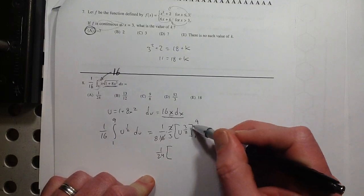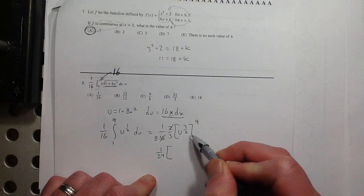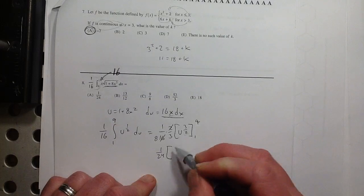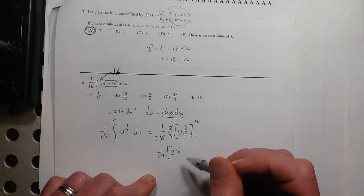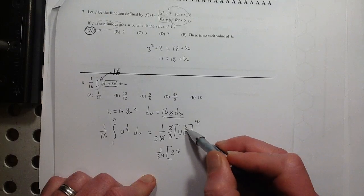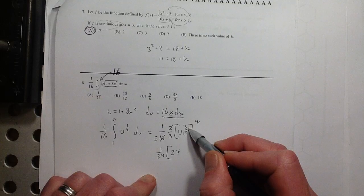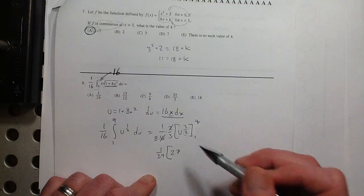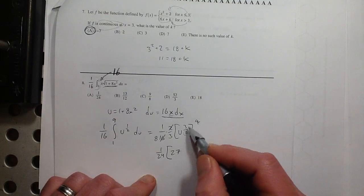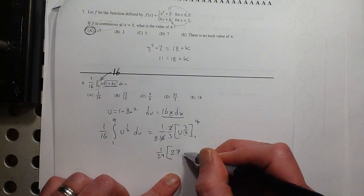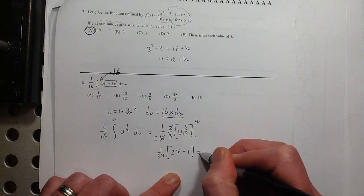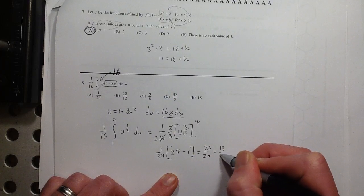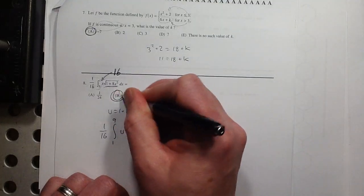So those cancel. That gives me an 8 there. So I've got 1 over 24. And then on the inside, I've got 9 to the 3/2. So what's 9 to the 3/2? That's the square root of 9, which is 3 cubed, which is 27. Always do the making smaller first. You could do 9 cubed, which is 729 or something, and then try to take the square root of that. Bad idea. Make it smaller first. And then 1 to the 3/2 is just 1. So that's 26 over 24, or 13 over 12, which is B.